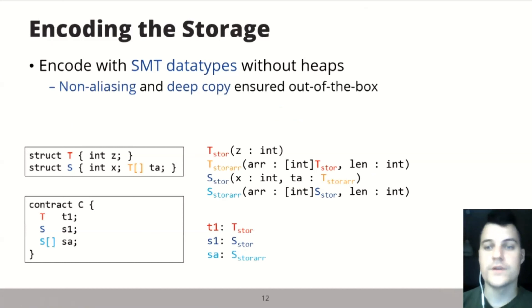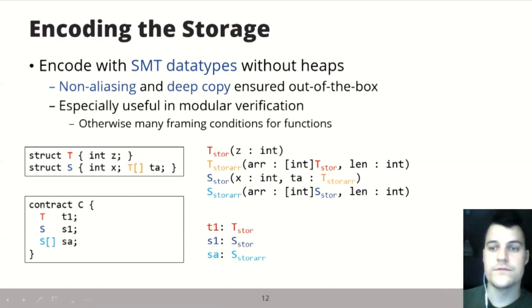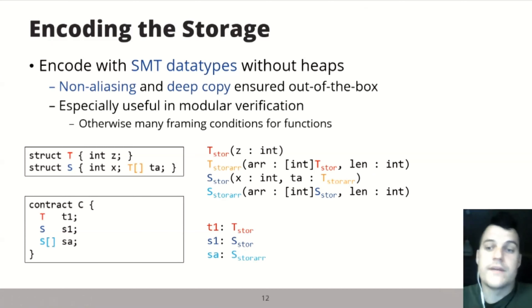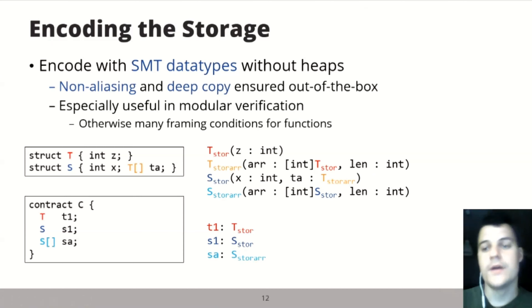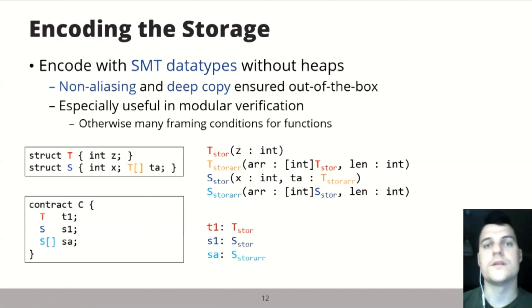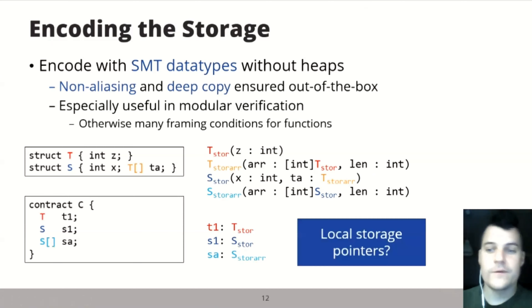A nice property of this encoding compared to a heap-based model is that non-aliasing and deep copy are ensured out of the box, which is especially useful in the context of modular verification. Otherwise, many framing conditions would be needed — each function would need constraints saying state variables don't overlap. We also know precisely what is being modified inside the function, making reasoning much more effective. However, one big question remains: how to deal with local storage pointers, since with SMT data types we cannot just point to some of their elements.